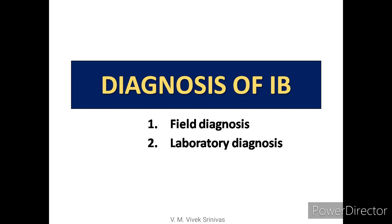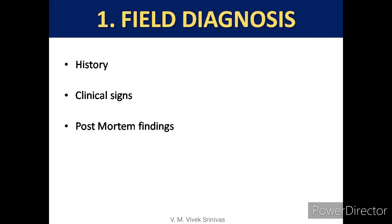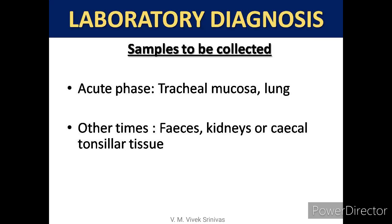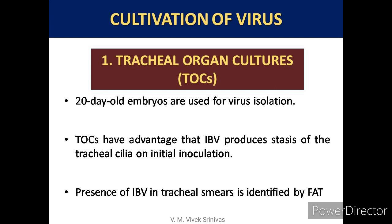Diagnosis can be done at field level or in the laboratory. Field diagnosis depends on the history of infection, clinical symptoms, and post-mortem findings. For laboratory diagnosis, tracheal mucosa and lung samples are collected during the acute phase of infection; at other times, feces, kidneys, or cecal tonsillar tissue can be collected. The virus can be cultivated by tracheal organ culture using 20-day-old embryos, where the virus produces stasis of the tracheal cilia on initial inoculation. Presence of virus in tracheal smears is identified by fluorescent antibody technique.